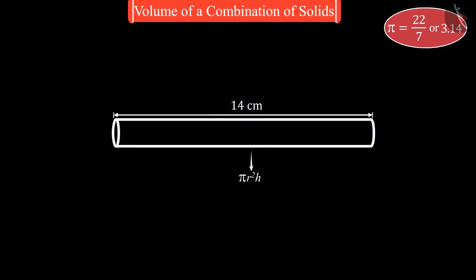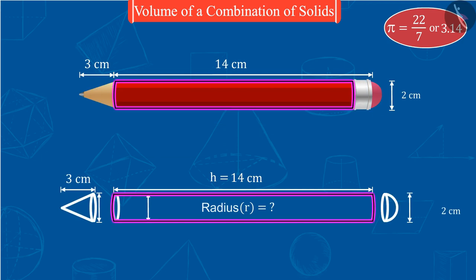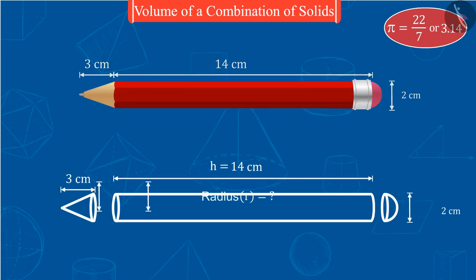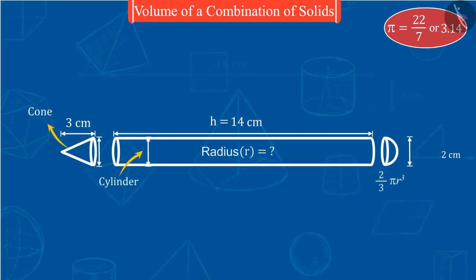Let's now find out the volume of this cylinder in the same manner. Here the height of this cylinder is 14 centimeters, so the value of h equals 14 centimeters. Can you tell what will be the radius of this cylinder? You can see that the radius of these figures is the same - the radius of cylinder, cone, and hemisphere will be equal, and hence the radius of all of these will be 1 centimeter. Now for cylinder, on putting the values of pi, r, and h and solving, we get 44 cubic centimeters.